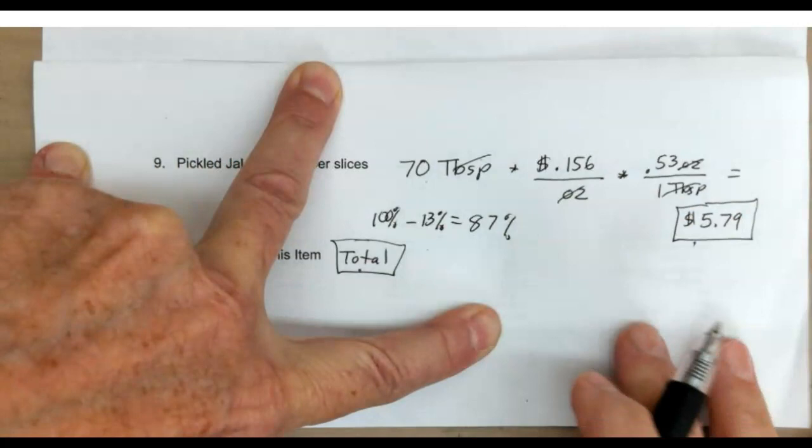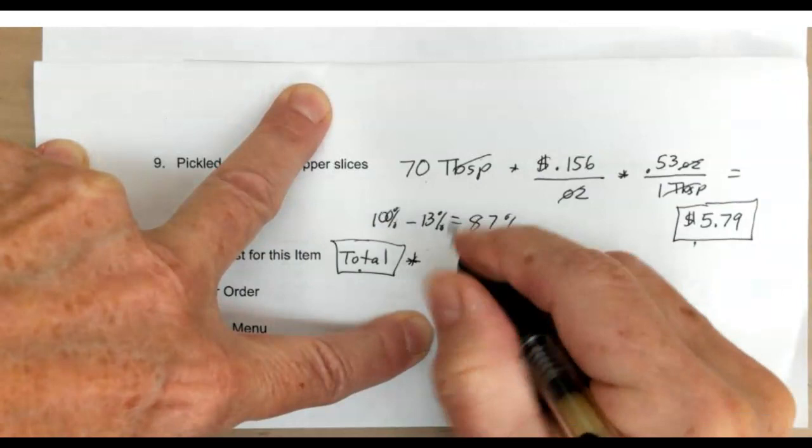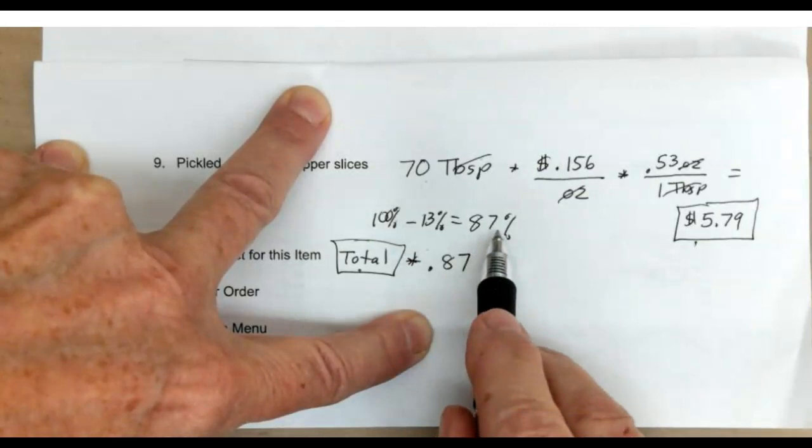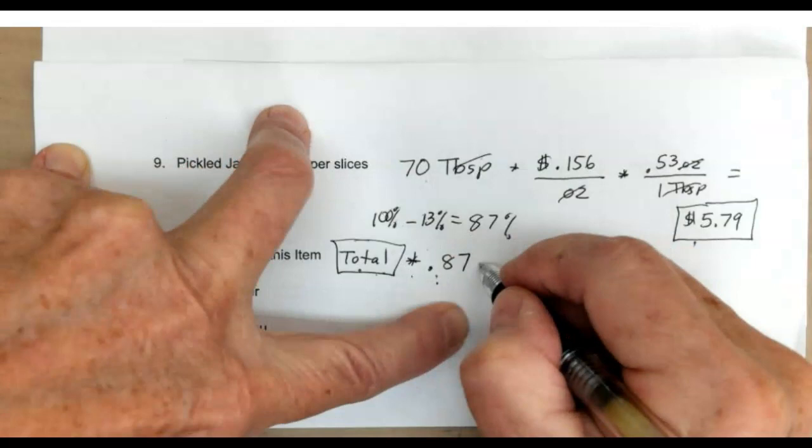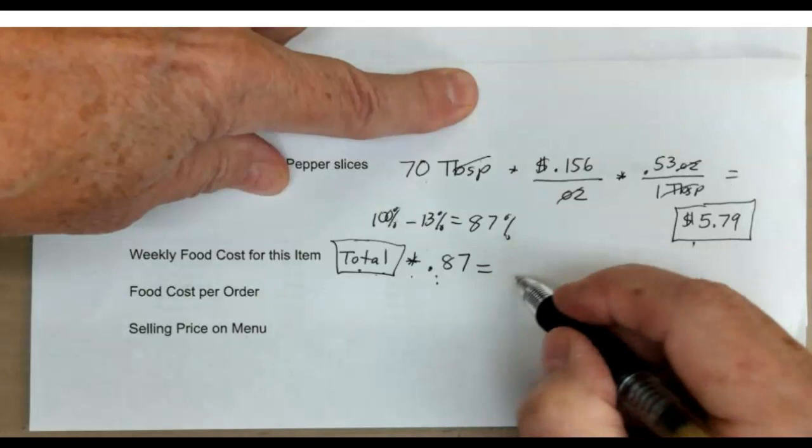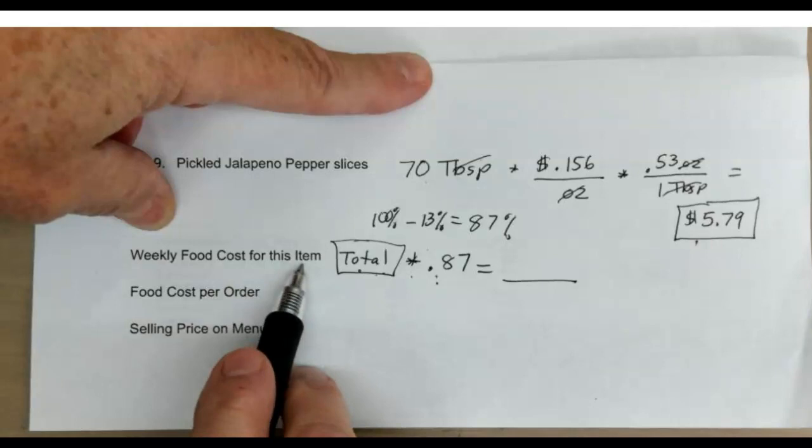What you want to do then is take 87% of this total. To change a percentage into a decimal, you move the decimal place two places to the left, so it would be times 0.87. You're going to get your total, multiply it by 0.87, and that is your weekly cost for making that macaroni and cheese recipe. That is the goal here: to get the weekly food cost for this item.